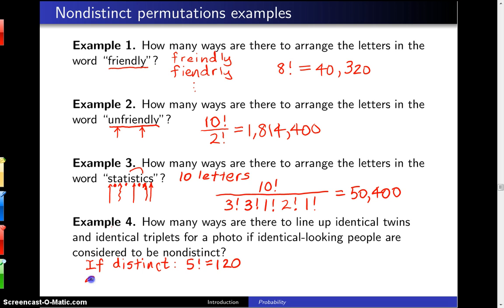Now since the question is saying they are nondistinct, in this case what you have is you have five people but you need to divide by 2 factorial because you can't tell the twins apart.